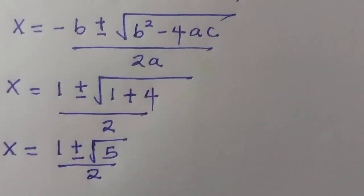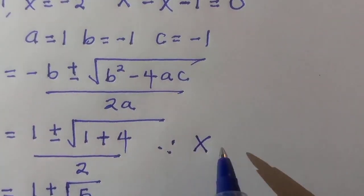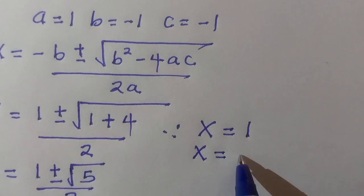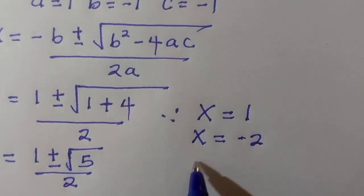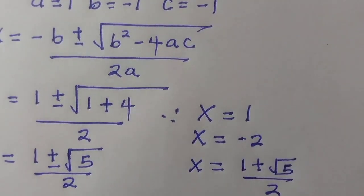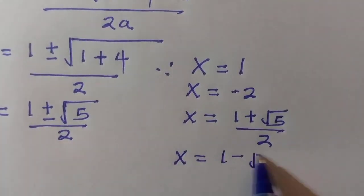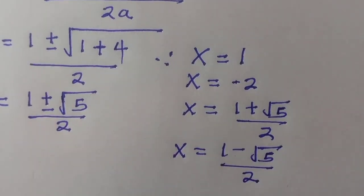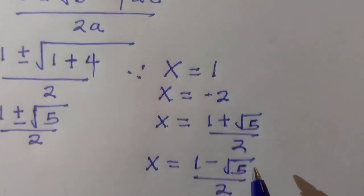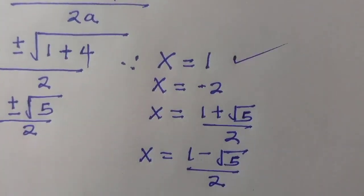To summarize, the four solutions are: x equals 1, x equals minus 2, x equals 1 plus square root of 5 divided by 2, and x equals 1 minus square root of 5 divided by 2. However, not all of these satisfy the original radical equation. The only root that satisfies the radical equation is x equals 1.